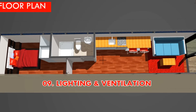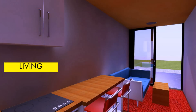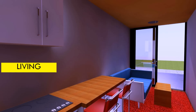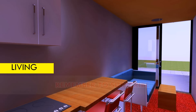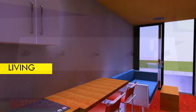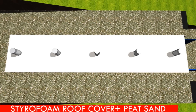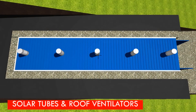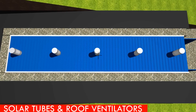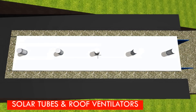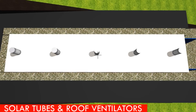Number nine: lighting and ventilation. With three sides of the container backfilled, there will be no windows or openings — only one side is left open — which will not provide sufficient lighting and ventilation. Instead of resorting to artificial lighting and mechanical ventilation, cut the roof and install solar tubes and roof ventilators at strategic locations, preferably one in every room.